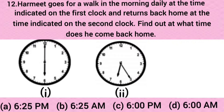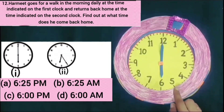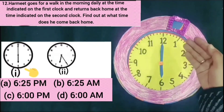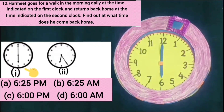The next question is: Hermit goes for a walk in the morning daily at the time indicated on the first clock and returns back home at the time indicated on the second clock. Find out at which time he comes back home. On the first clock, the hour hand is on 6 and the minute hand is on 12, so the time is 6 o'clock.